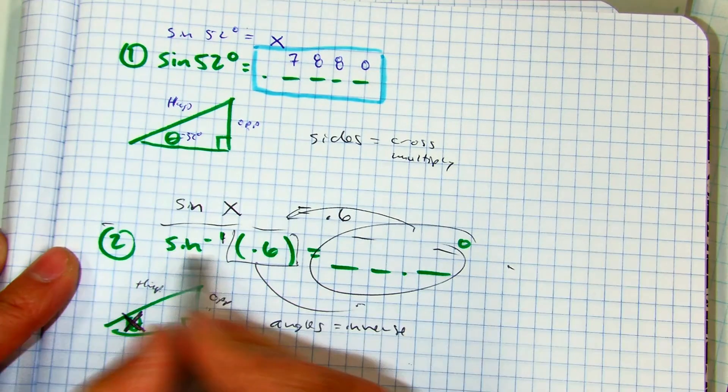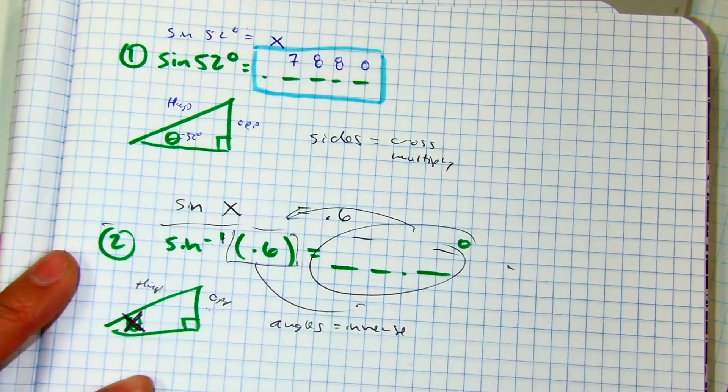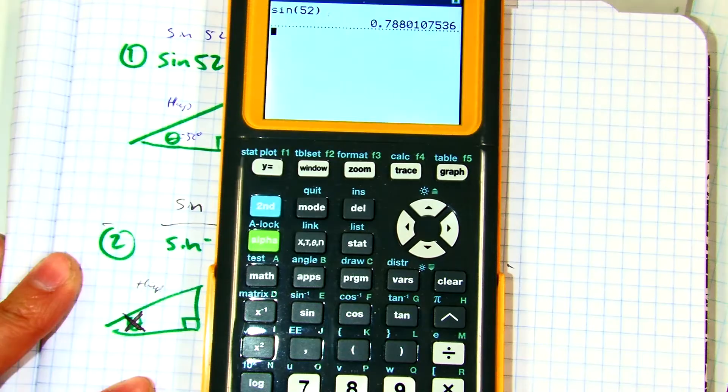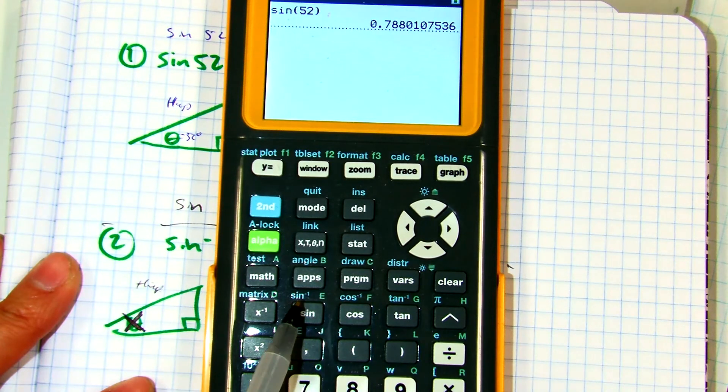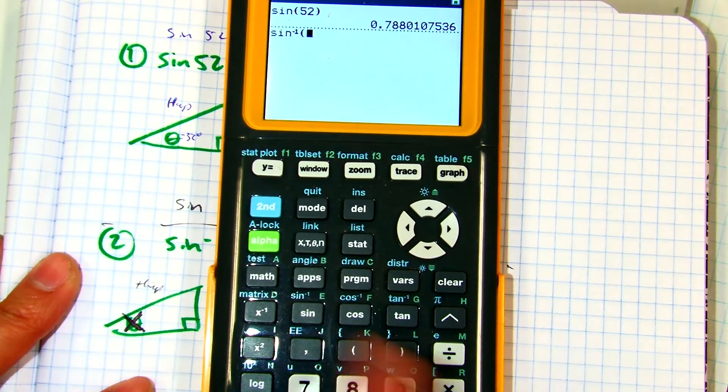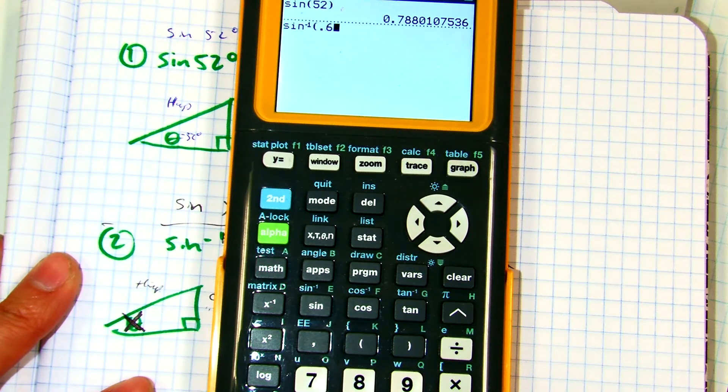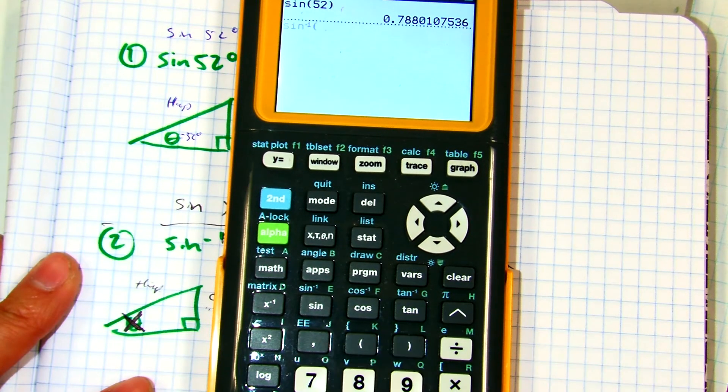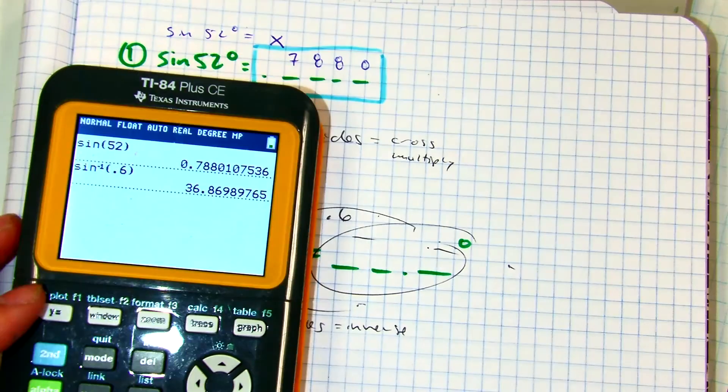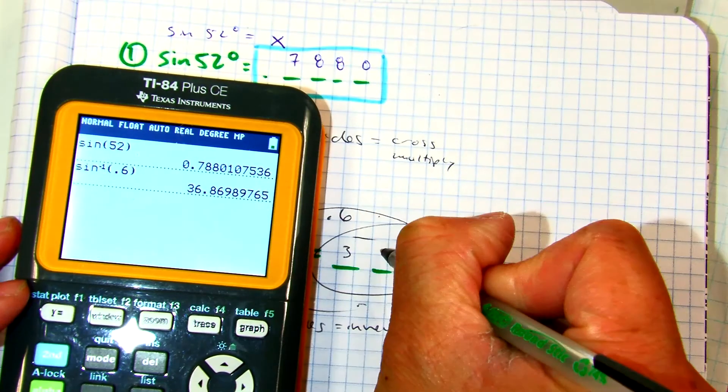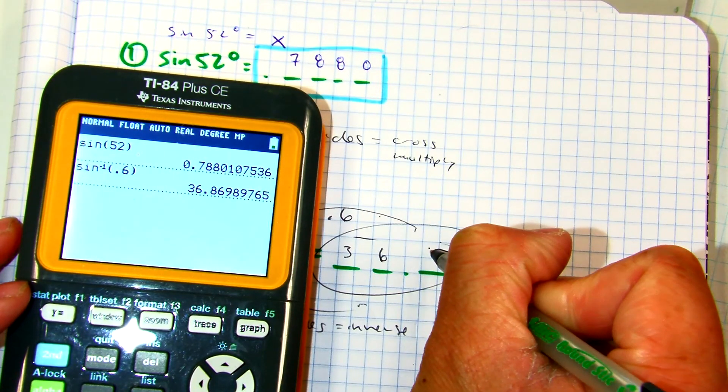So here's my calculator-ready equation. Remember, that is not the same button as sine. It is the inverse of sine in blue, so I'm going to press second, sine, and then 0.6. And if you round to the nearest tenth, our angle is 36.9 degrees.